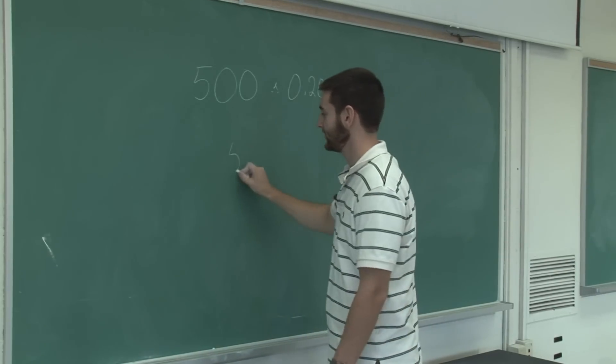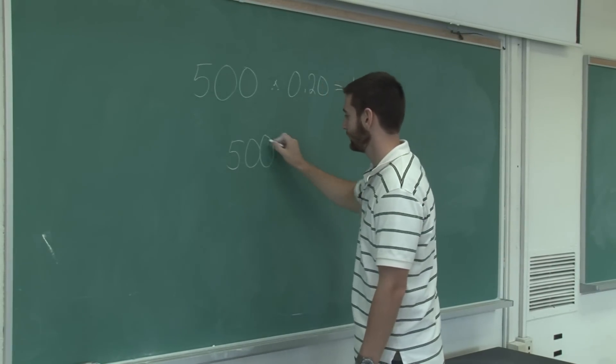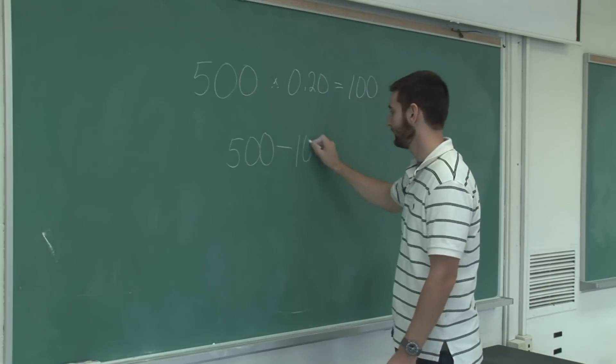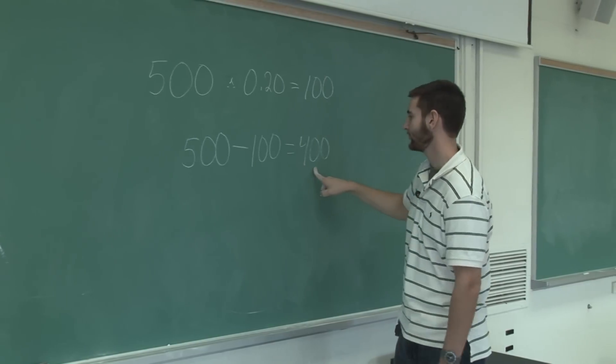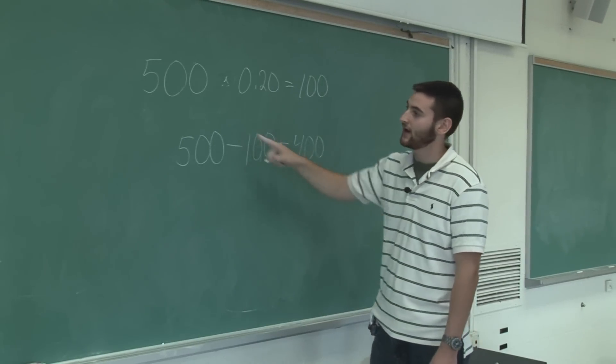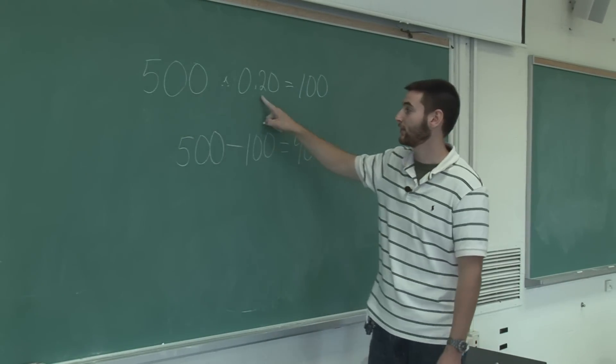So your final price is the original price of the item minus the discount. So $400 is the final price after a $500 item has been marked down 20%.